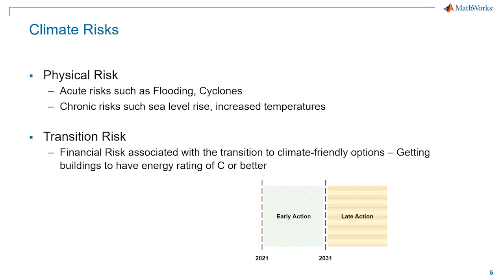Climate risks are of two types: physical risks and transition risks. Physical risks can be further split into two: acute risks such as flooding, or chronic risks such as sea level rise. Transition risks are the financial risks associated with transitioning to climate-friendly options — in our case, getting buildings to have energy ratings of C or better. The Bank of England has defined two different scenarios: early action, if action is taken before 2031, and late action, if taken after 2031. Based on when the transition efforts are taken, there are some subsidies that could be had.